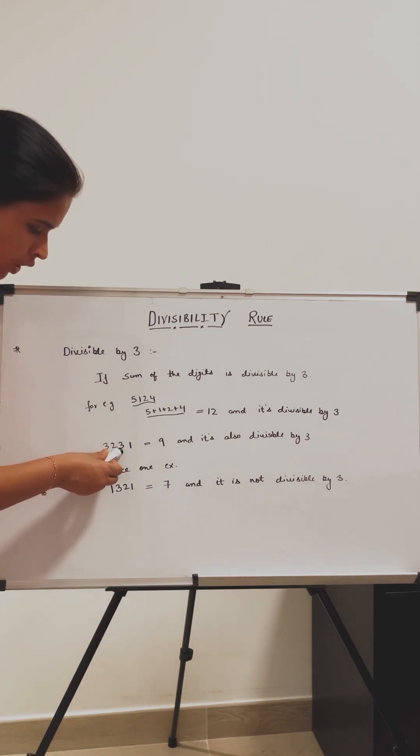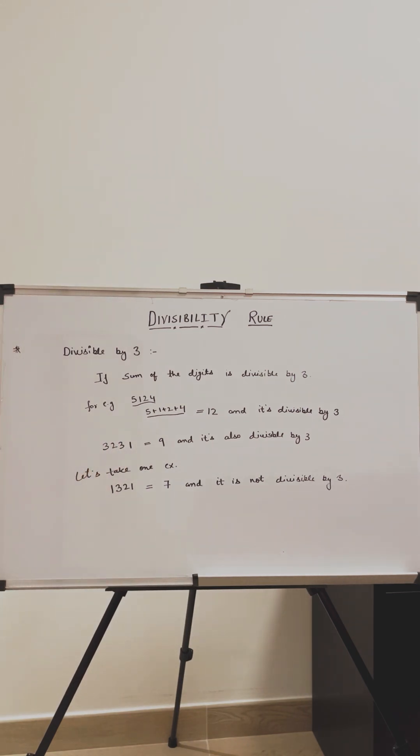3, 2, 3, 1. Now, the sum of the digits is 9 and 9 is also divisible by 3. So this whole number will be divisible by 3.